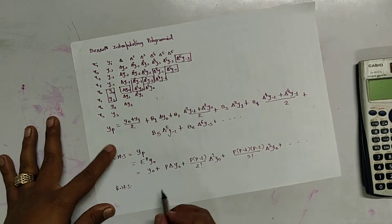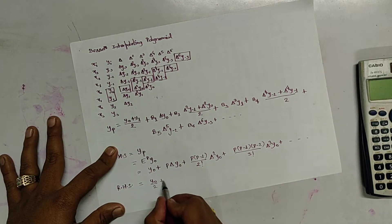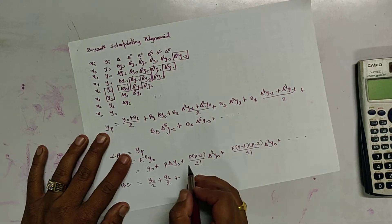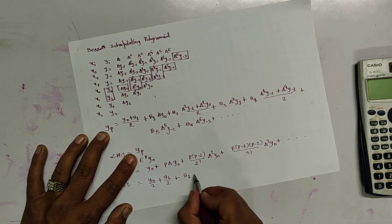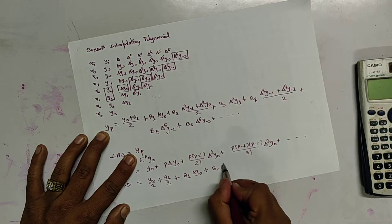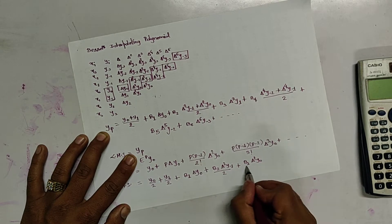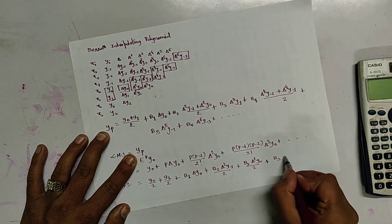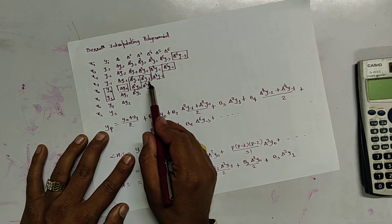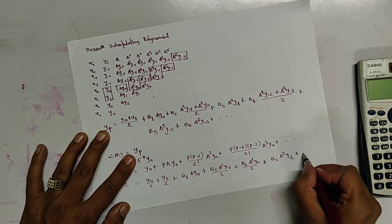So in terms of y-naught we write RHS. RHS equals y-naught by 2 — y-naught plus y1 is broken — so y-naught by 2 plus y1 by 2. Plus b1 del y-naught, plus b2 del-squared y-naught by 2, plus b3 del-cubed y-minus-1, plus dot dot dot.